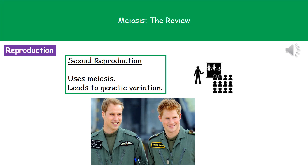Welcome to our review on meiosis. A lot of organisms such as humans use sexual reproduction. For sexual reproduction to take place, the process of meiosis must happen first. Make sure you learn the spelling because exams are quite strict about it. The key thing about sexual reproduction is that it leads to genetic variation in an organism and a species.